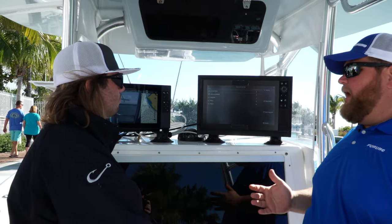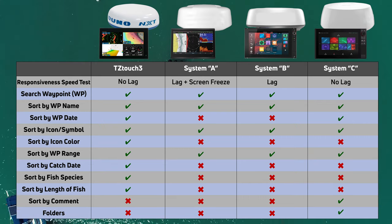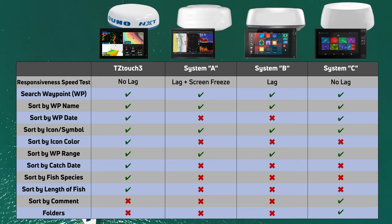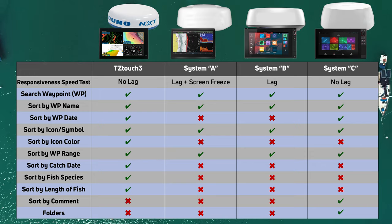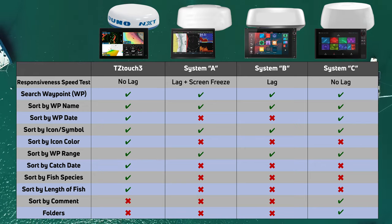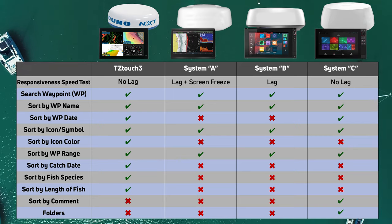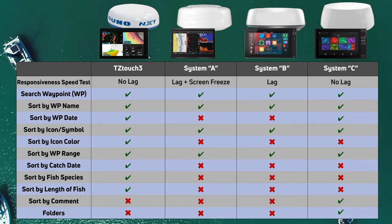Searching for a waypoint is an important task, especially when you have hundreds or thousands to look through. All four systems allow you to type in a name to search, and sort by name, range, and symbol or icon. TZ Touch 3 and System C also allow sorting by date. Only TZ Touch 3 gives additional sort options like color of icon, catch date, fish species, and length of fish. System C also allows sorting by comment and incorporates a folder system.